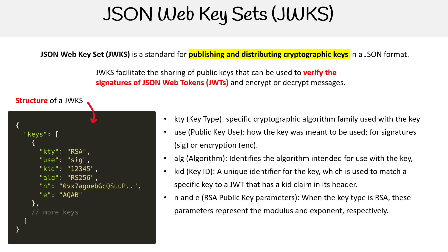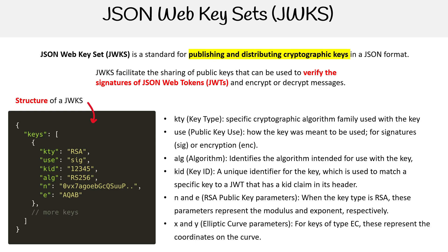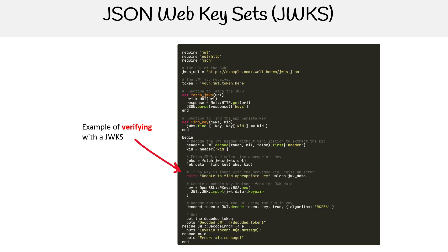We have a couple of parameters here specifically for RSA, and then these additional ones which I don't know much about. The implementation is a bit more involved when you're using JWKs. The idea is that JWKs are publicly hosted somewhere — again, going back to the Amazon Cognito example, AWS has a public URL that you'd provide. After you decode your JWT, you extract the signature and then go verify it.